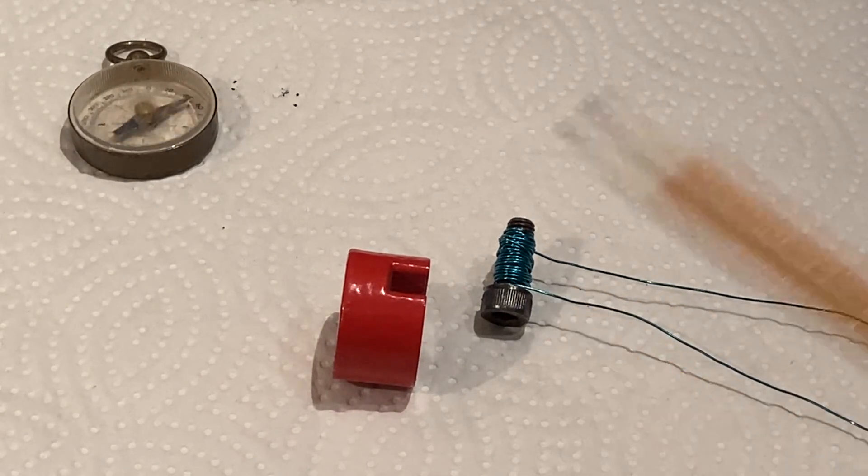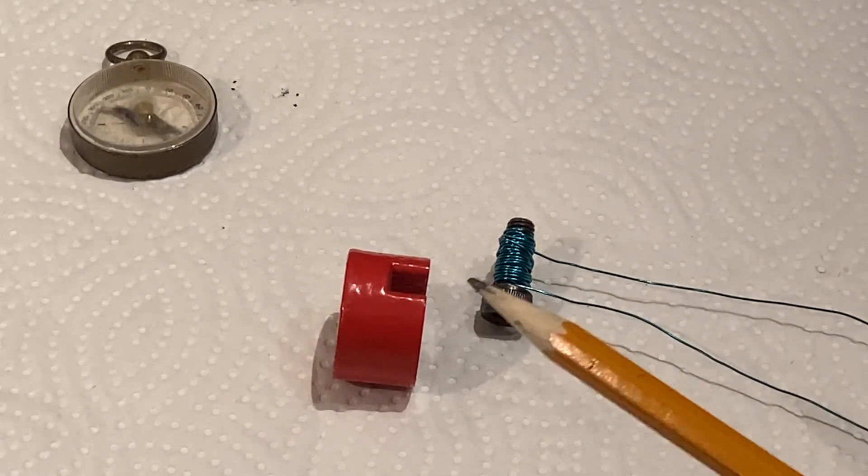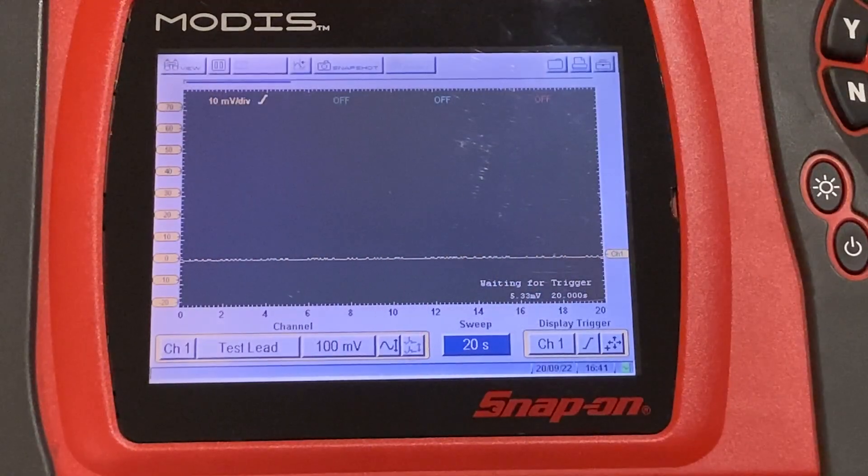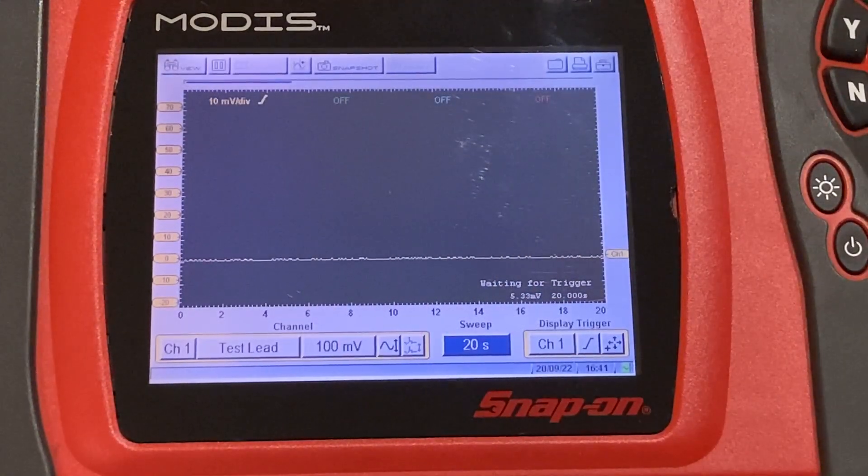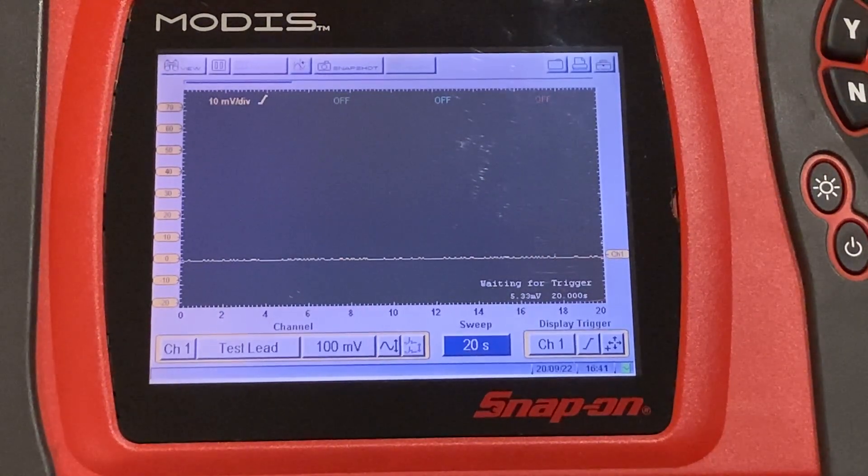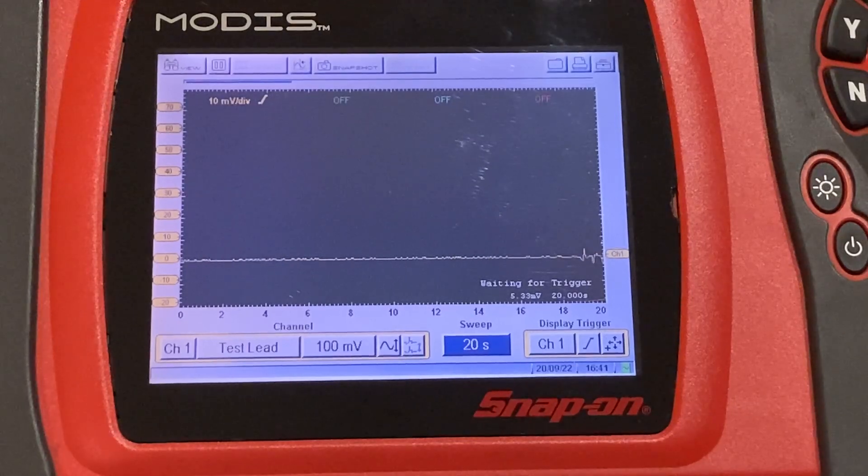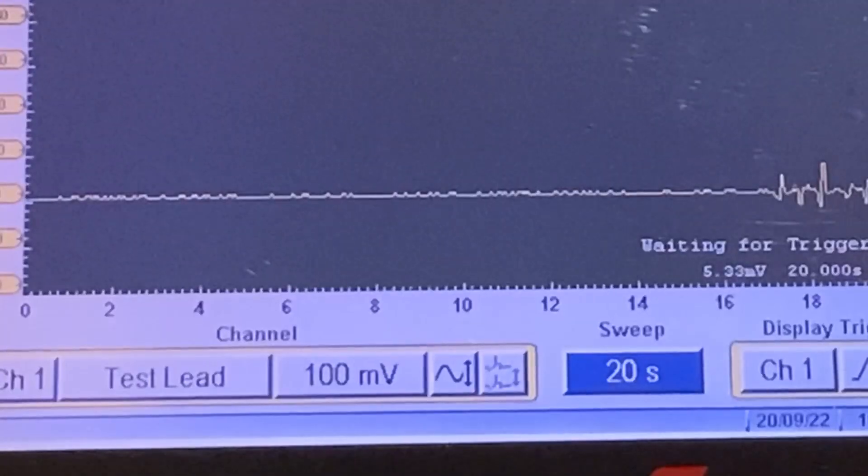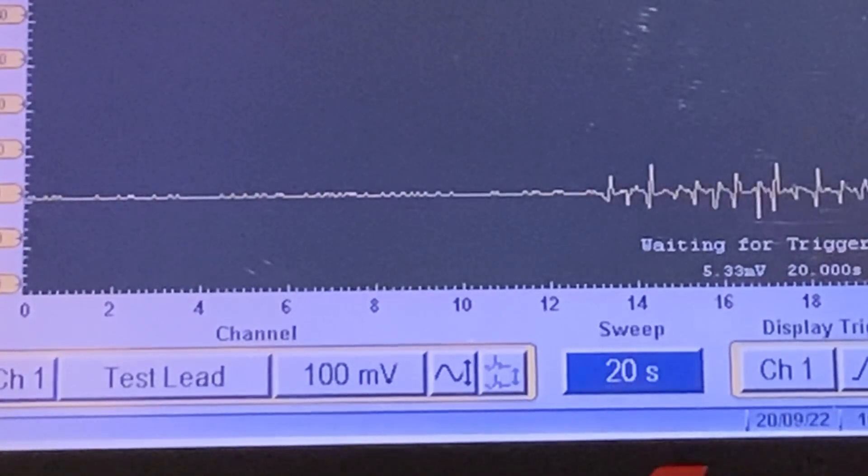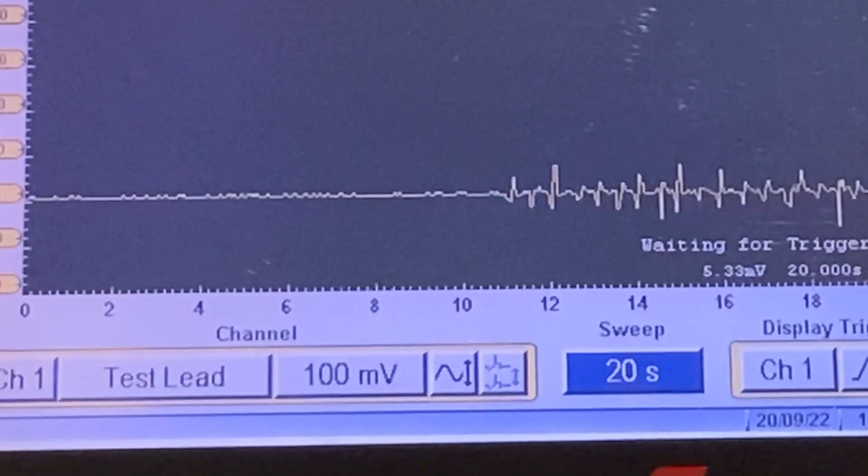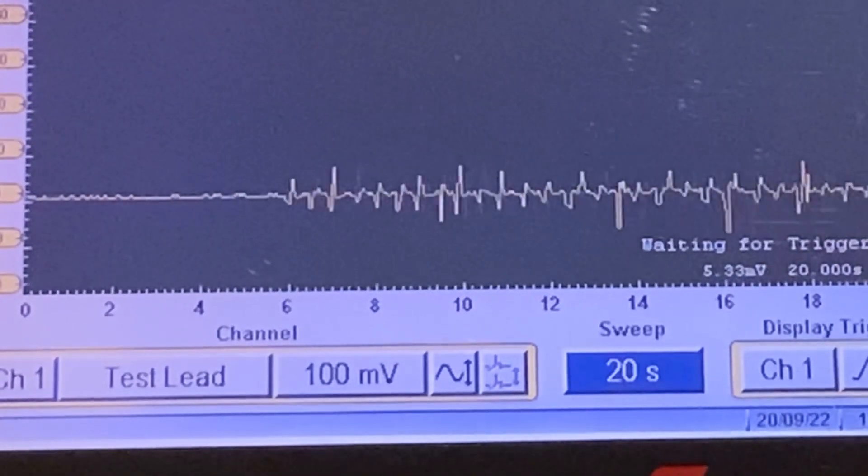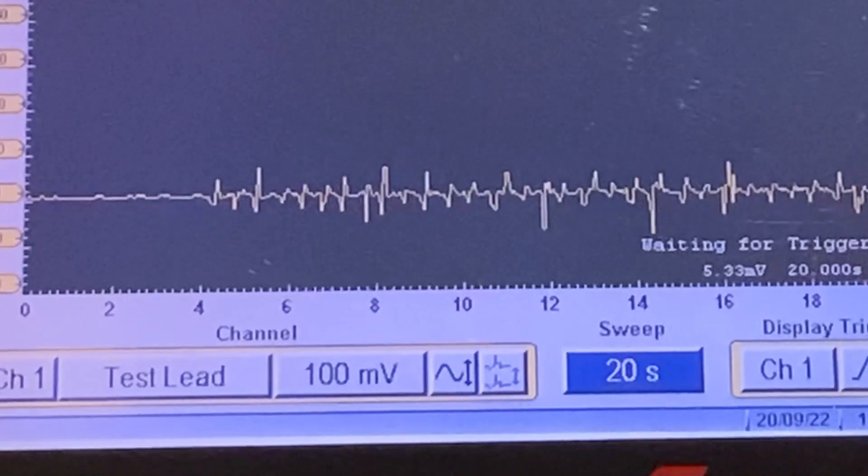It doesn't get much simpler than this, but let's actually see it. I have the two leads on the little coil hooked up to my oscilloscope here. I've gone on a very slow time base so we can make some comparisons. All I'm doing is sweeping the magnet past the coil, and you can see that it does in fact work. Turns out physics as reported in high school textbooks is accurate.